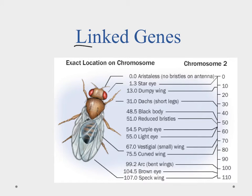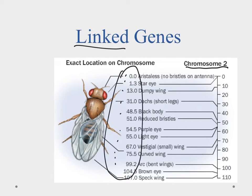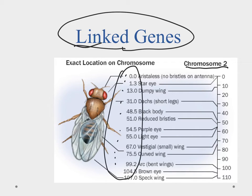Our last topic is what we call linked genes. The fruit fly is really commonly used, and the reason it's commonly used is it only has a few chromosomes. If we take a look at chromosome number two, we see that it has all of these different traits. Because all of these traits are on the same chromosome, during segregation when we start separating these chromosomes out, we notice that these traits — because they're on the same chromosome — tend to stick together. That's what we call linked genes. Linked genes are genes that are on the same chromosome, so we see them passed along together.